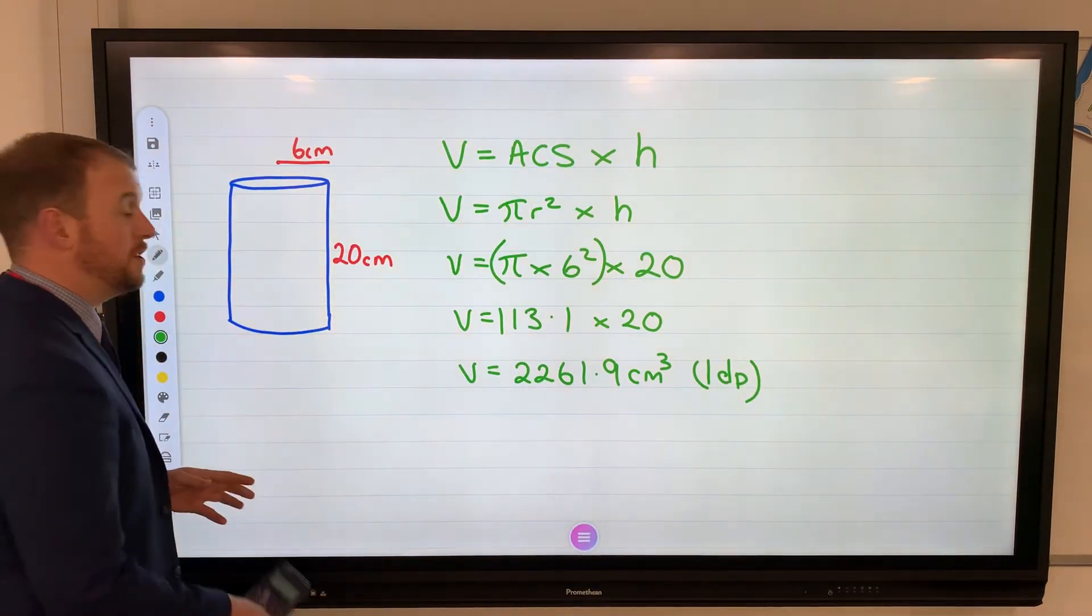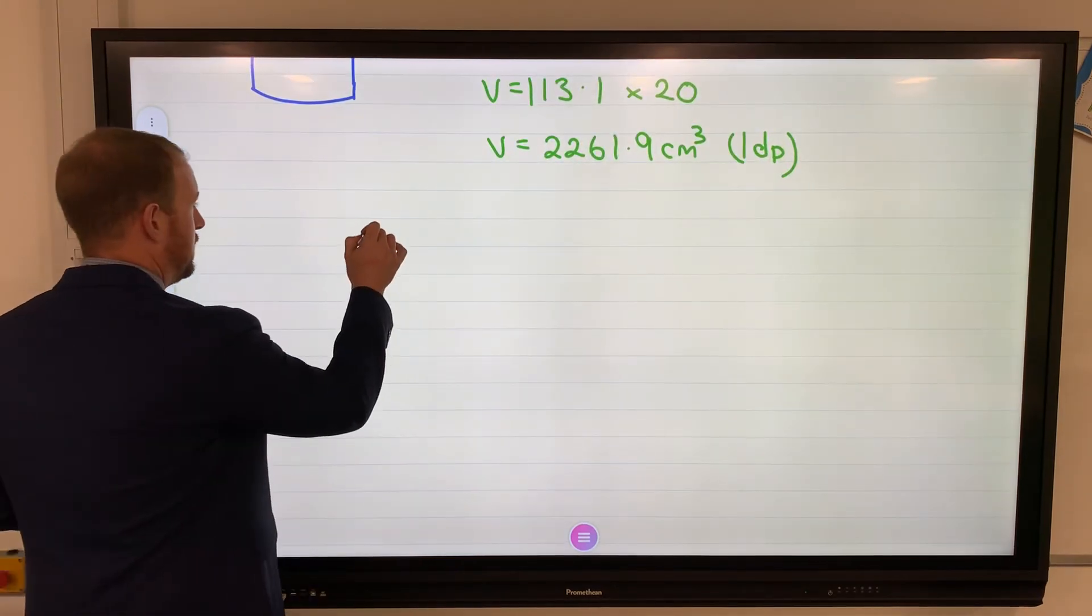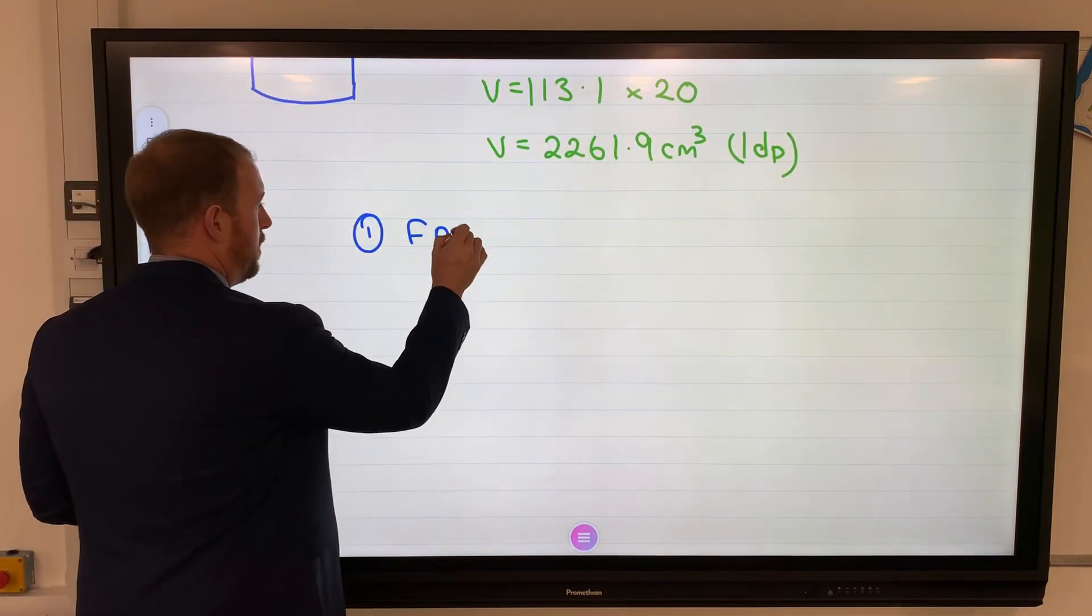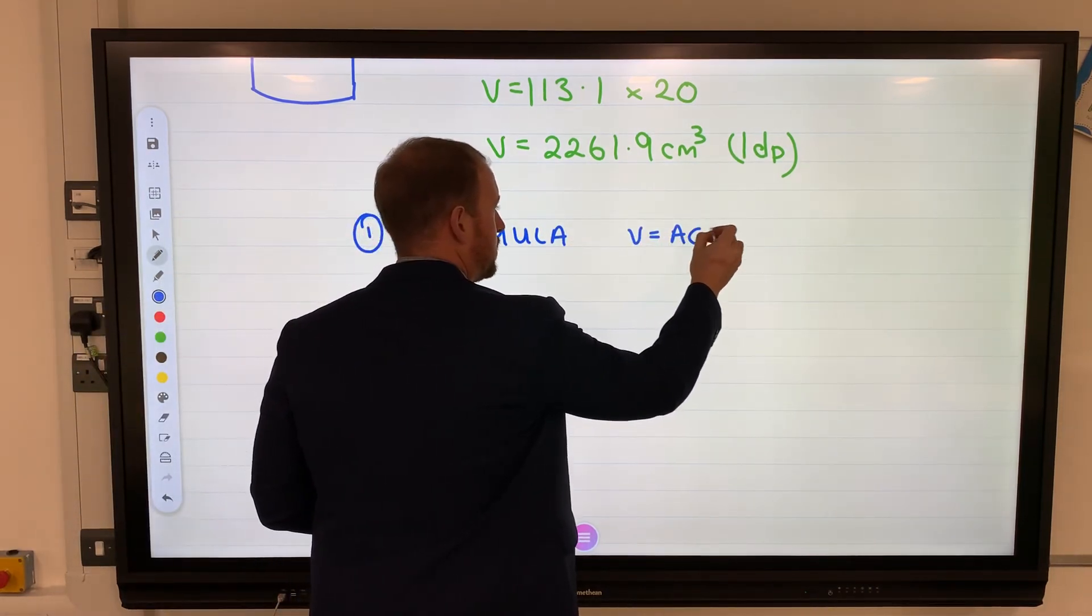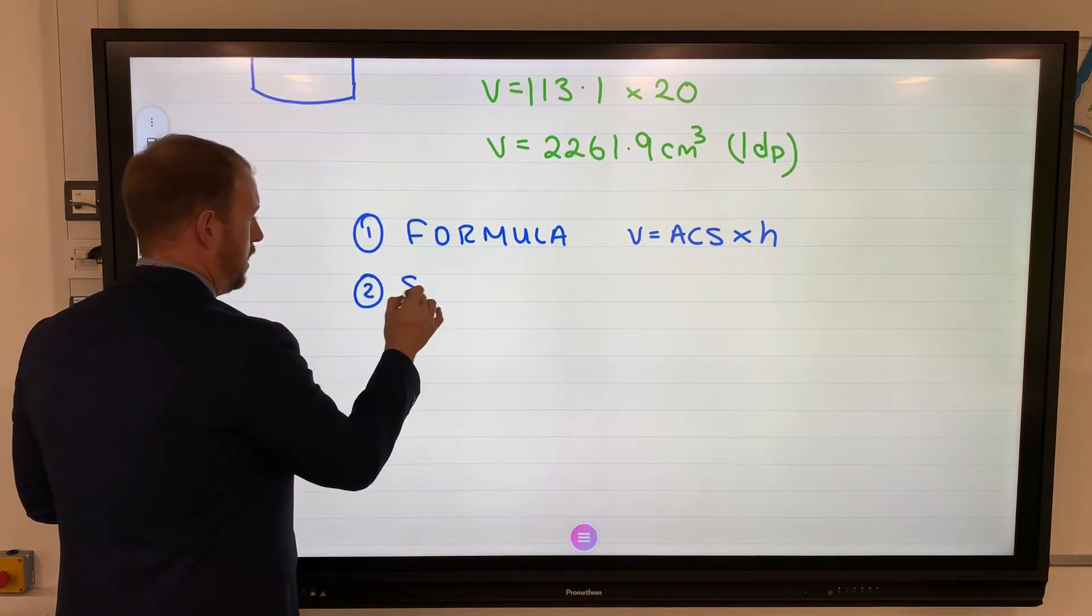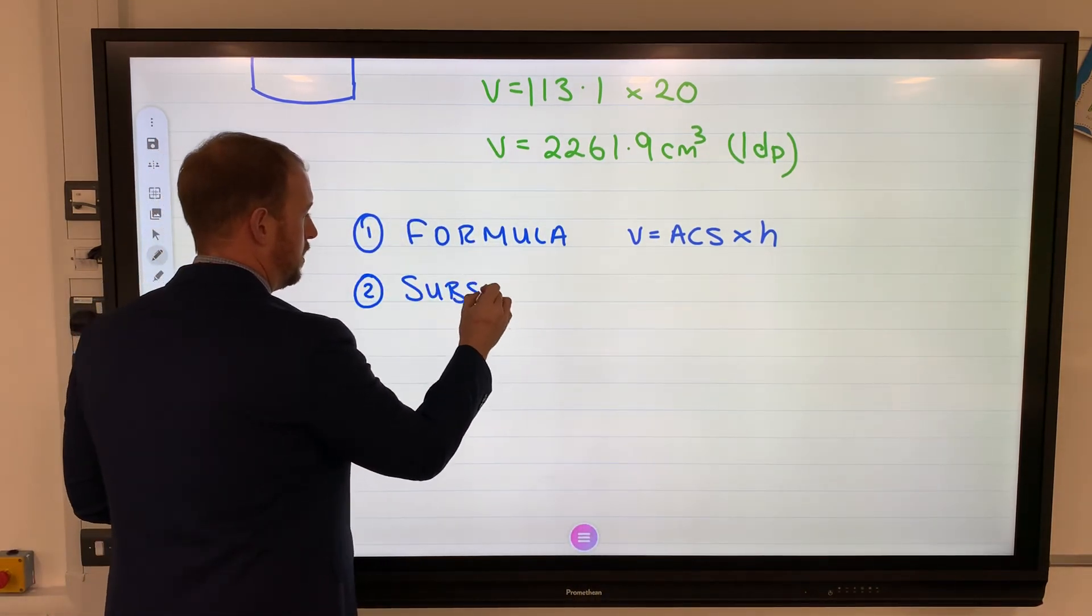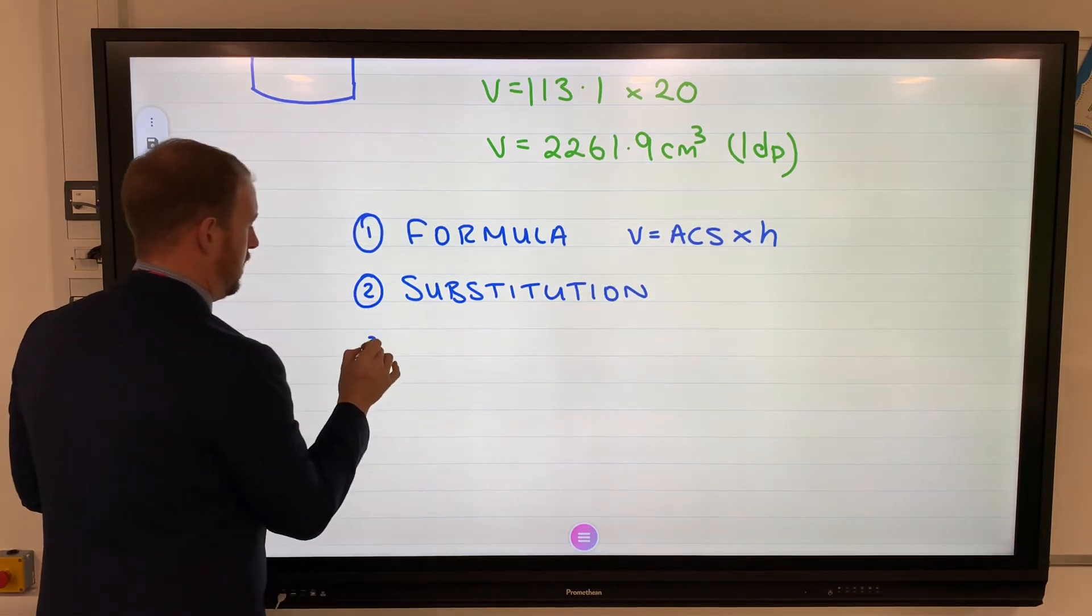So for every single one of these we have had formula, which is volume equals area of cross section times the height, to substitution which means put the numbers in instead of the letters, answer.